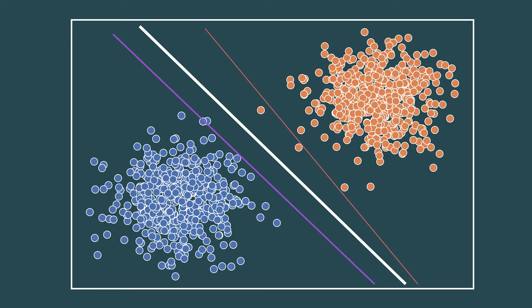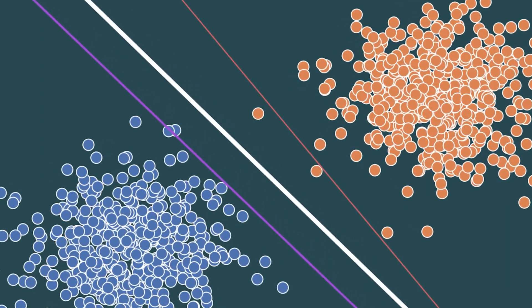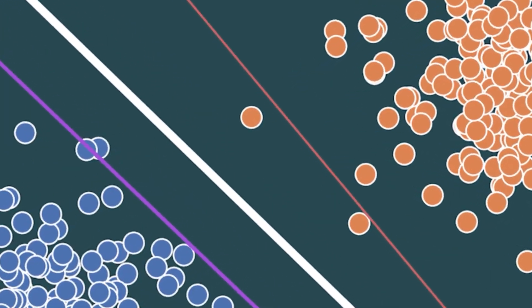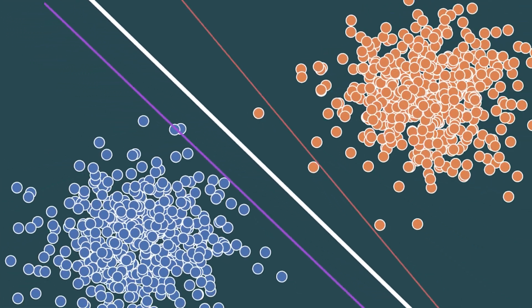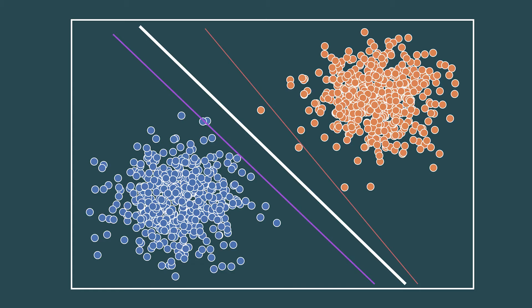If we would choose the line closer to the orange class as a separating function, then data points that are actually closer to the orange class might be classified as blue. The same holds for the line closer to the blue class. Hence, the best line that we could choose would be the line maximizing the distance to both classes. This is the line exactly in the middle between both classes.